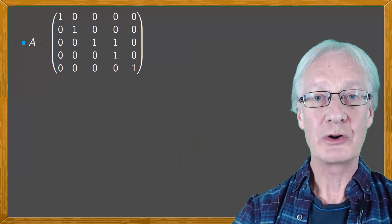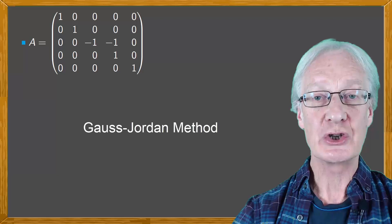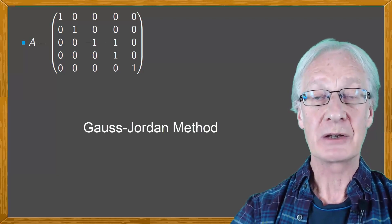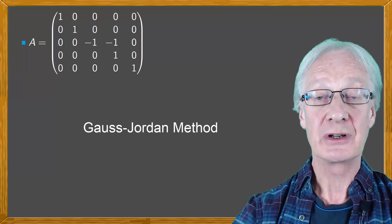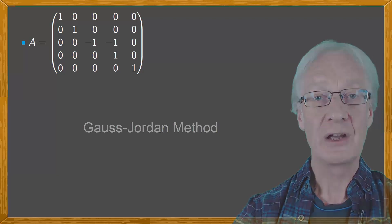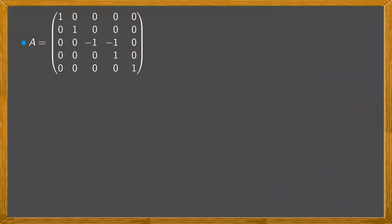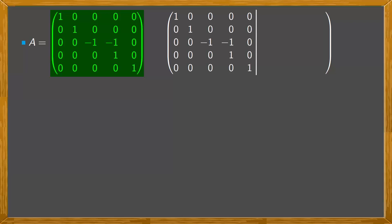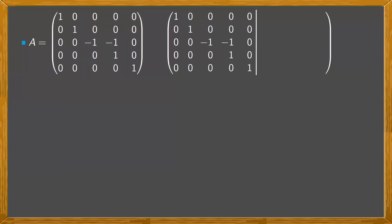However, here we're going to use the Gauss-Jordan method to find the inverse, because this makes the calculation quicker and easier. To obtain the inverse of our matrix, we write the matrix by blocks. In the first block we write our matrix A, and in the second block we write the identity matrix. Since our matrix is 5×5, the identity matrix is also 5×5.